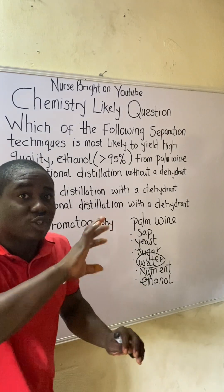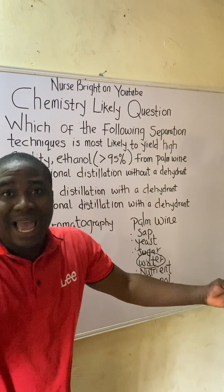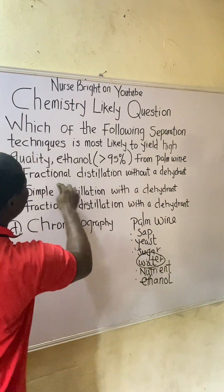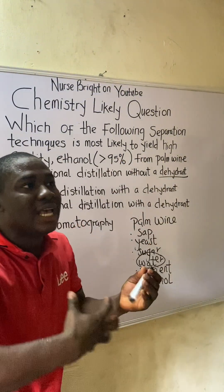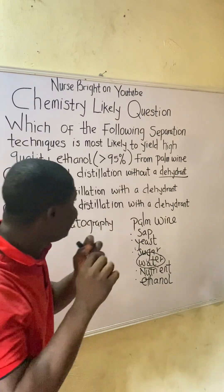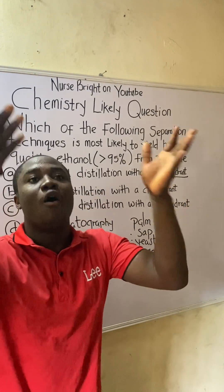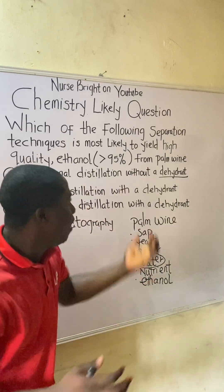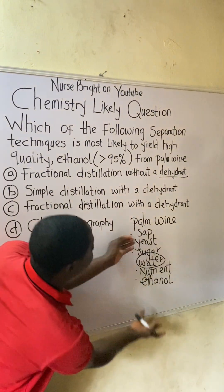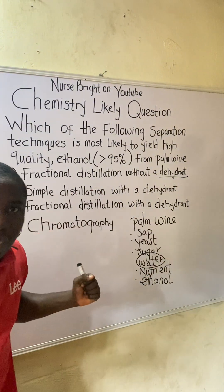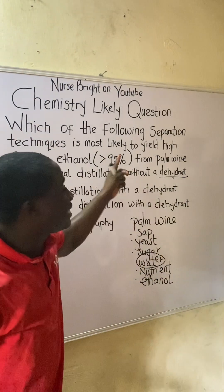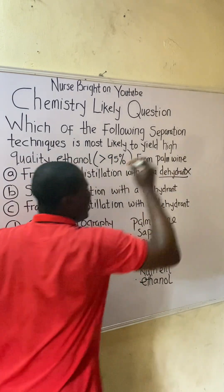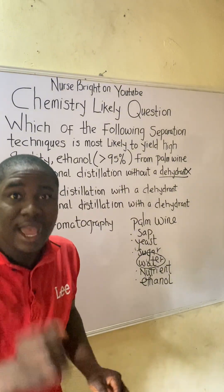Option A can never be the answer because there is no dehydrant. Anytime you hear 'dehydrant,' it refers to a substance that removes water. Without a dehydrant, the removal of water will not be effective enough to yield ethanol above 95% purity. We must have a dehydrant, so option A is eliminated.